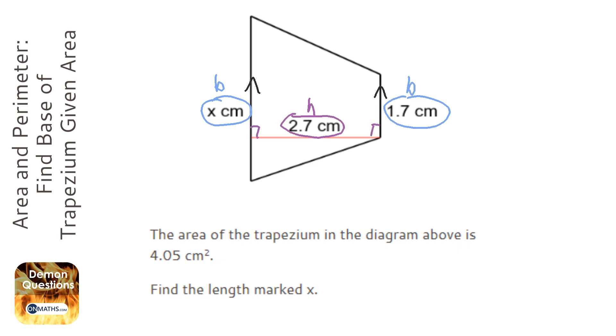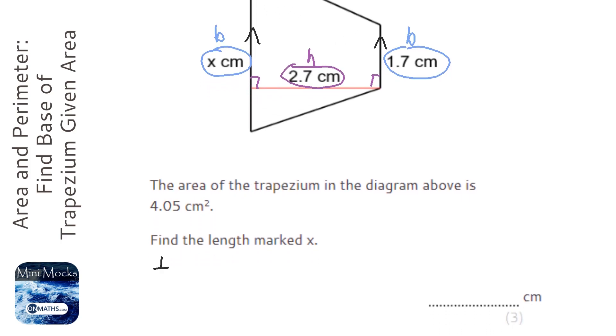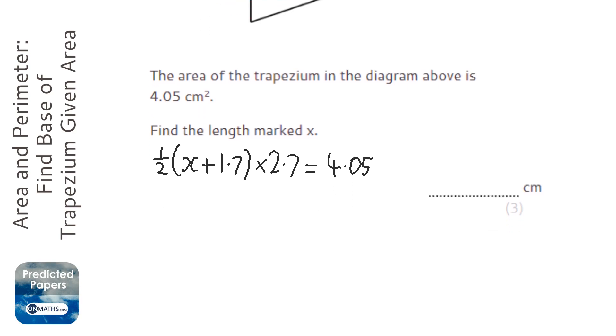I'm going to write this down. We do half of x plus 1.7, times it by the height, which is 2.7. That gives us the area. We're told the area is 4.05 cm², so this becomes a solving question.